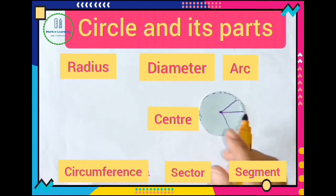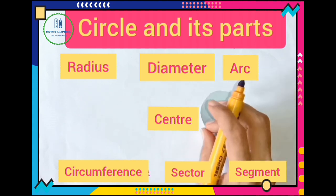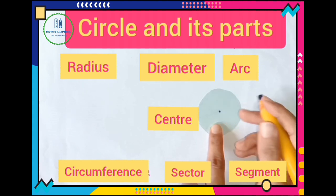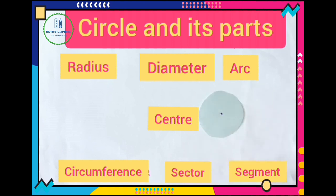And now you know about this center part and we indicate using dot. So this is the first part of this circle: center.